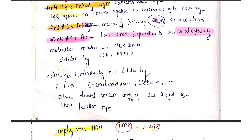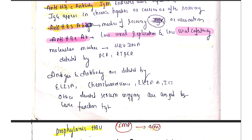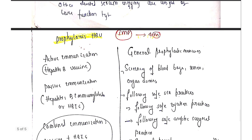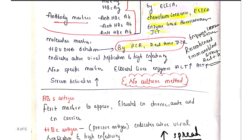Other methods include the molecular method — the virus can be detected by PCR or RT-PCR, mainly targeting the Hepatitis B DNA, since Hepatitis B virus contains double-stranded DNA. Importantly, there is no culture method available for Hepatitis B virus detection.